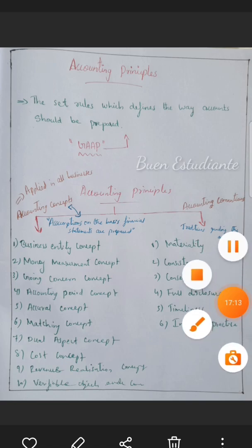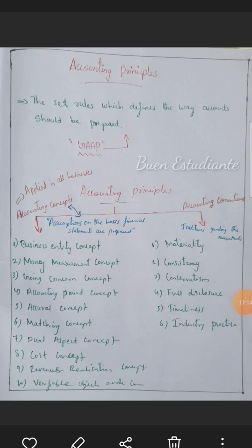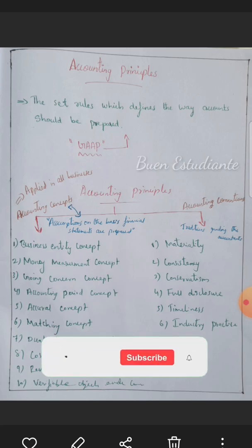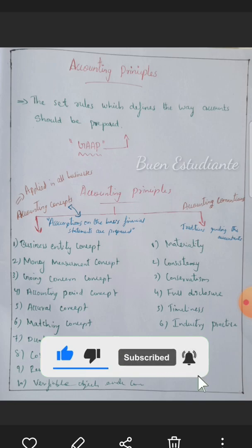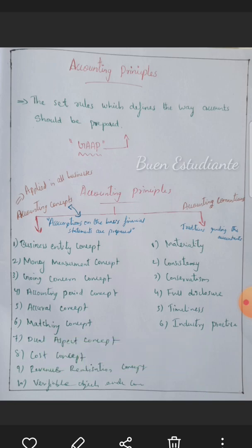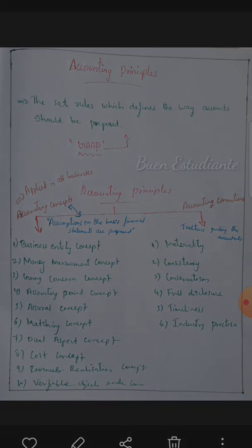The final convention is Industry Practice. Different industries may follow different accounting practices. For example, a charity or hospital organization may not focus on profit, whereas a trading organization or insurance company will account for profit differently. Each industry follows its own standard practices. Thank you very much.